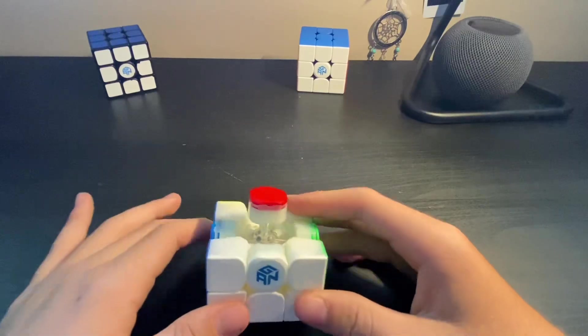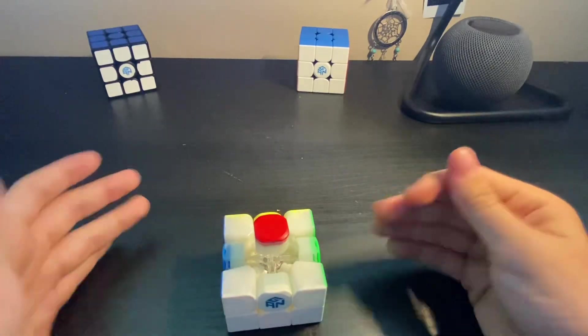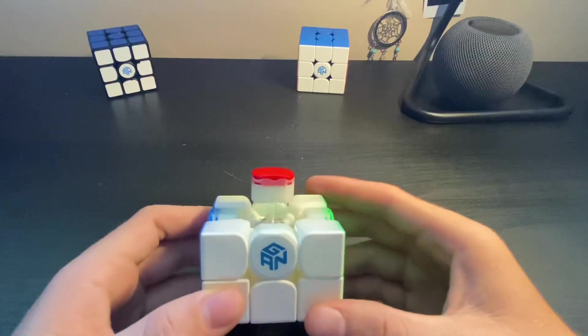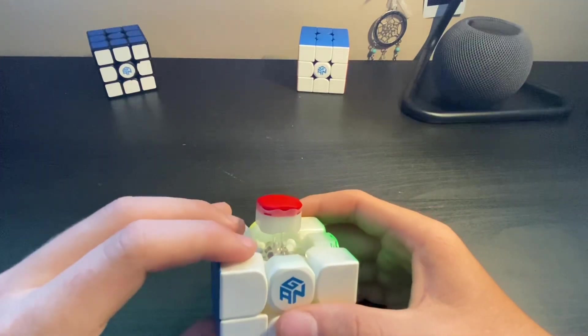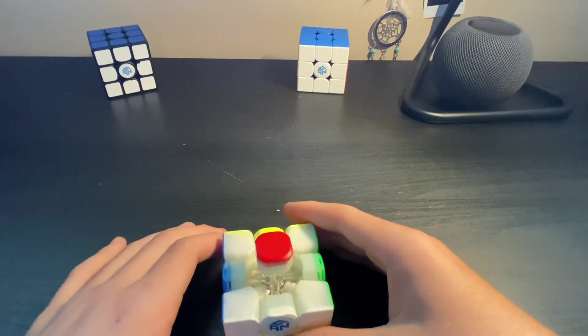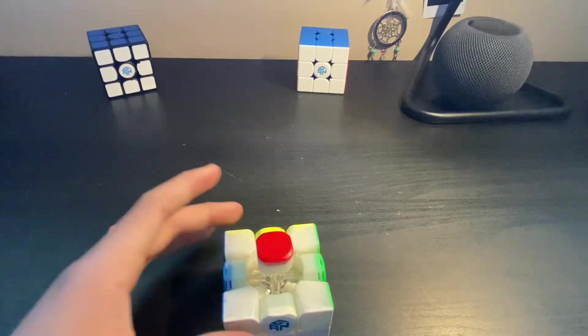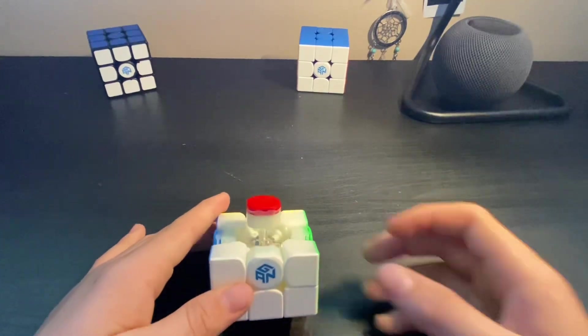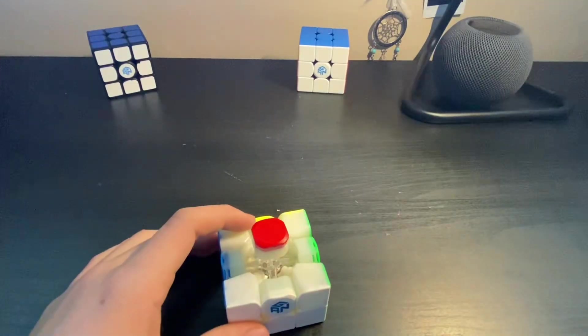Now, I know there isn't a lot to say about a maglev core, because that's really all it is. It's just a way to increase stability on the Rubik's Cube. And if there is anything I missed, feel free to reach out in the comments and let me know.